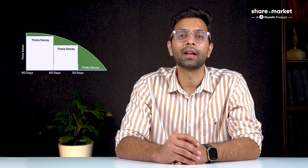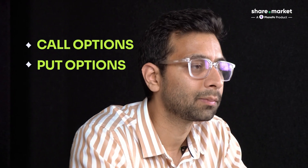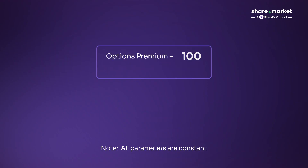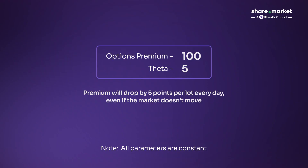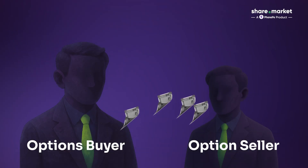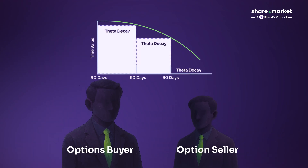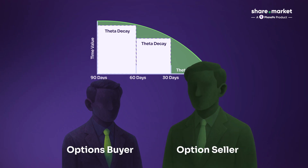Now let's talk about Theta — the clock. Theta measures how much value an option loses as time passes, assuming everything else stays constant. Both calls and puts lose value as expiry approaches. For example, if an option premium is 100 and theta is 5, the premium will drop by 5 points per lot every day, even if the market doesn't move. For option buyers, theta is the enemy — you pay a premium and its value decreases with time if the market doesn't move in your favor. Your premium melts like an ice cream. For option sellers, theta is a friend, because the seller receives the premium.